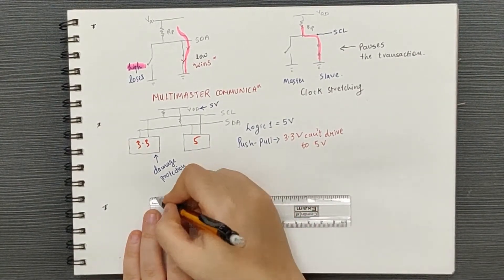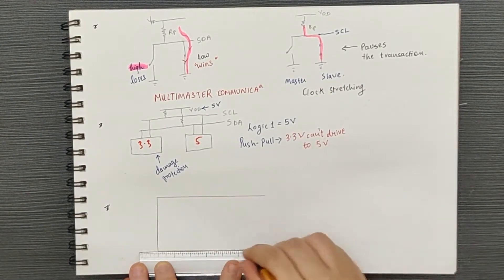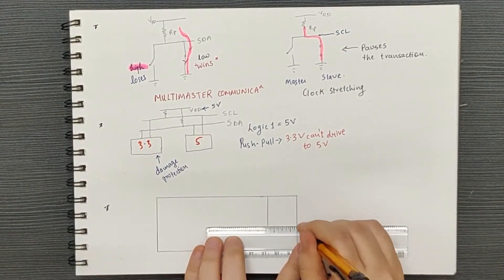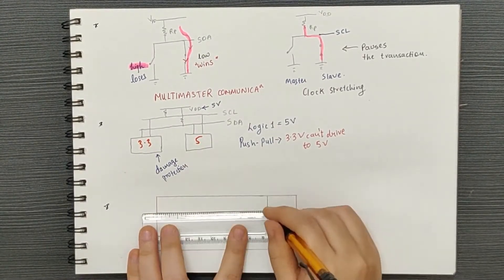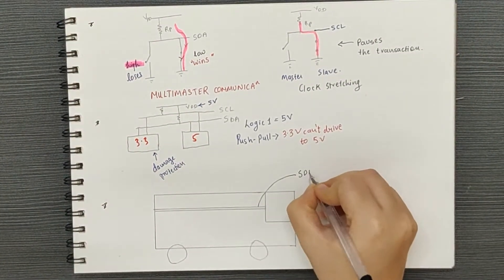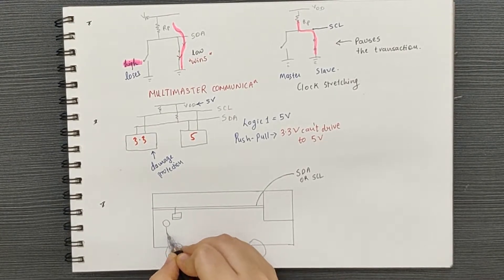let's summarize everything about the open drain configuration of I2C by considering a simple analogy. So, the communication lines that is SDA and SCL are like a harness or a rope which is used in a bus and the devices are like passengers traveling in the bus.